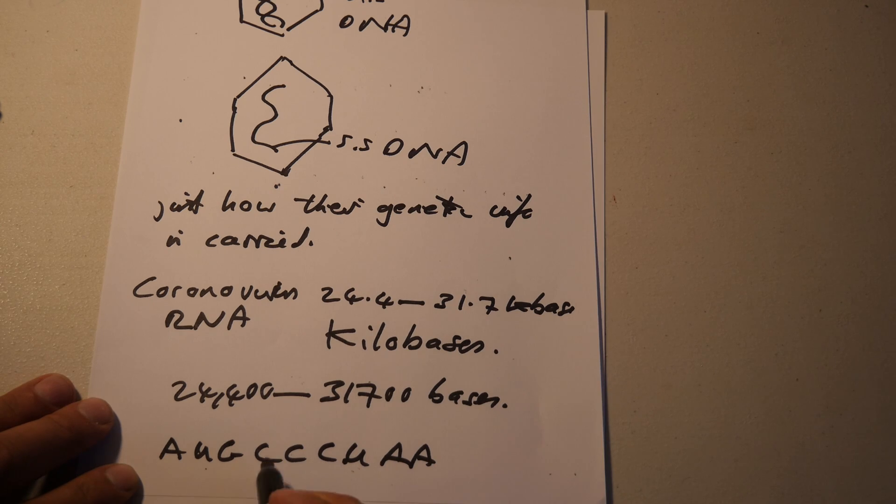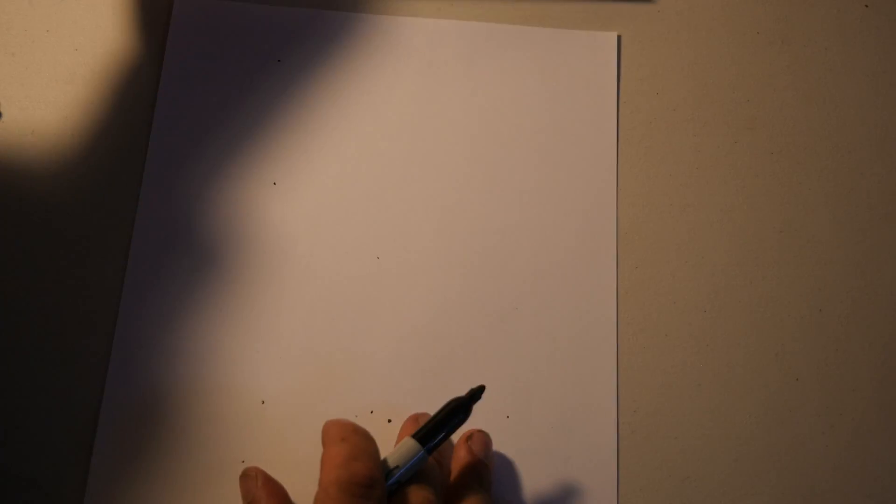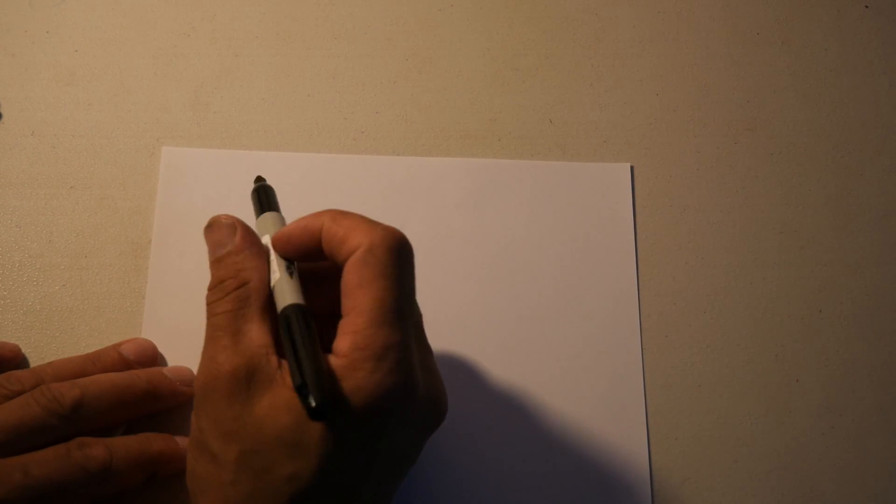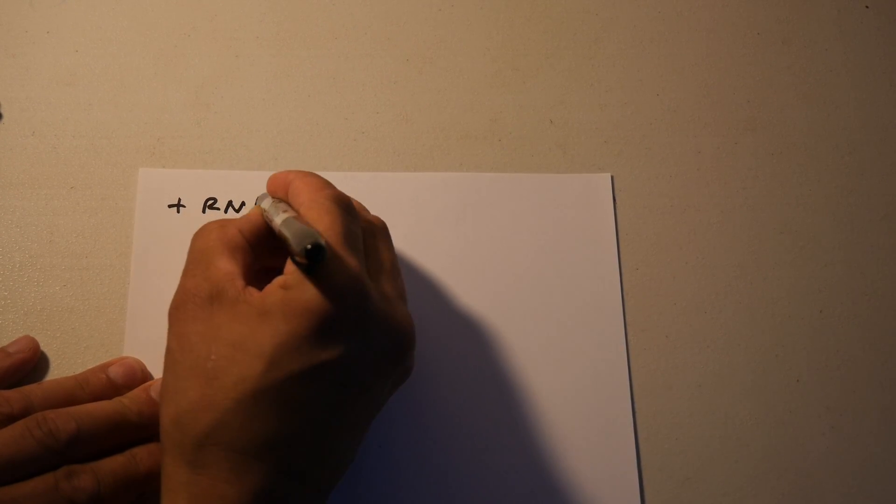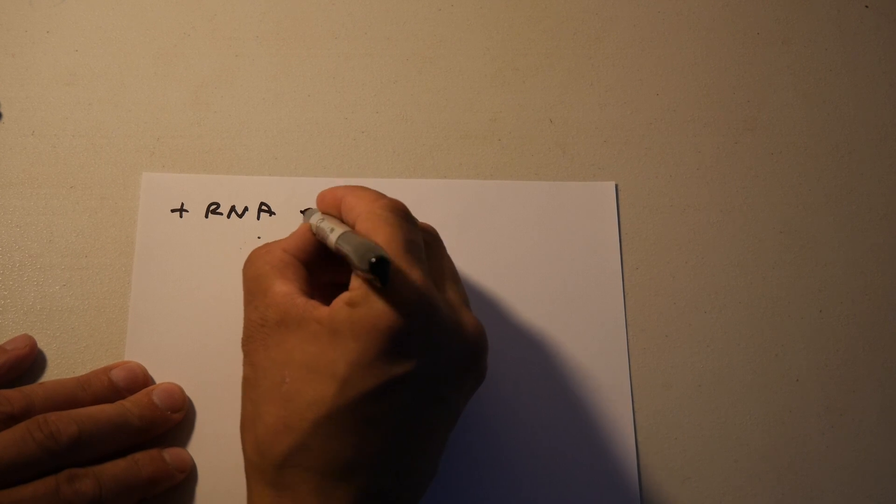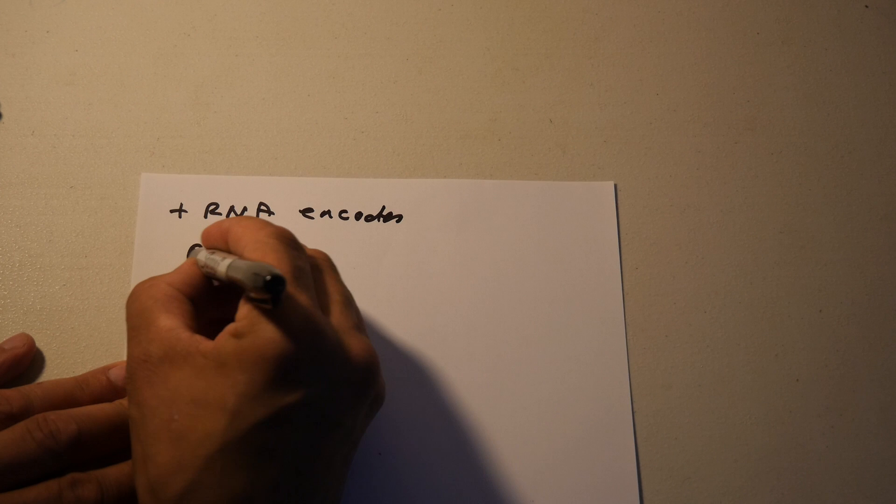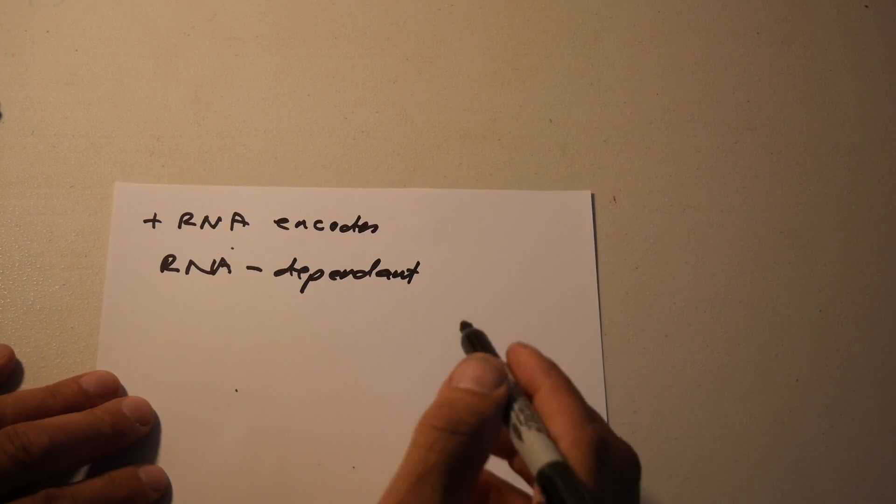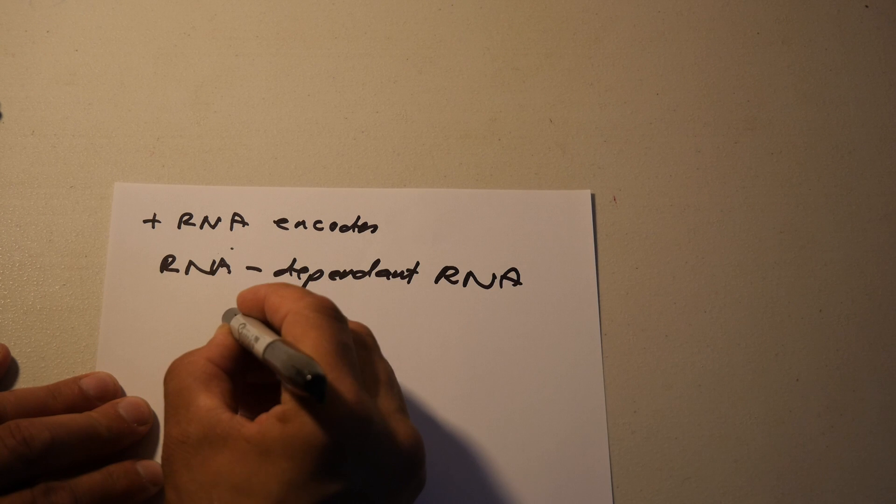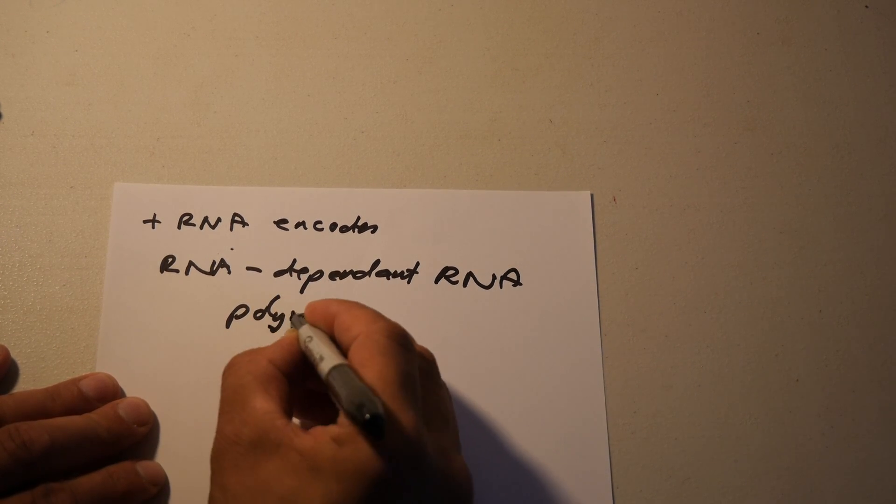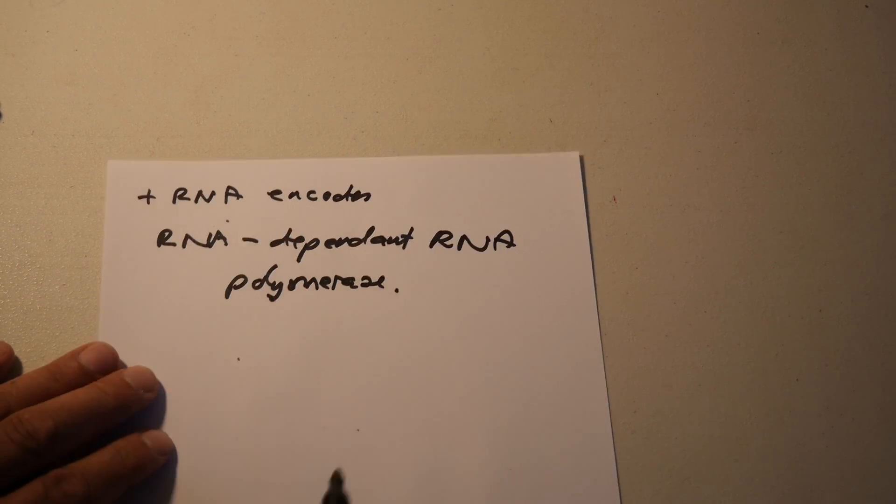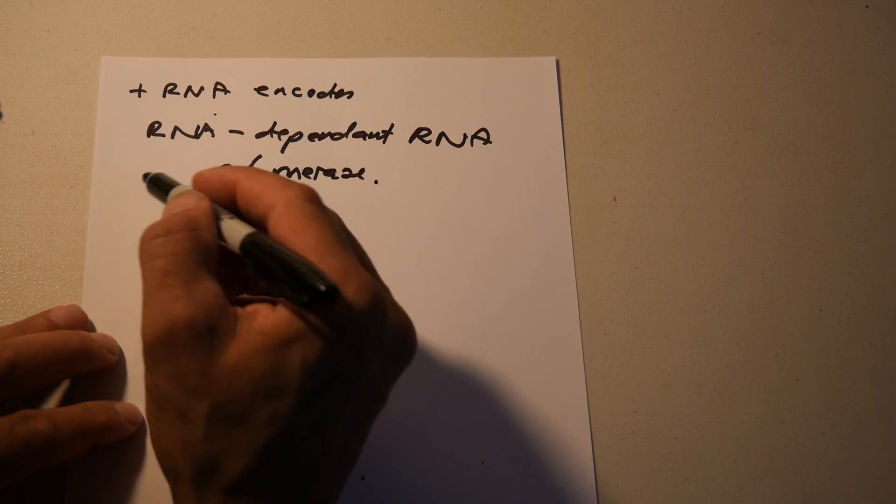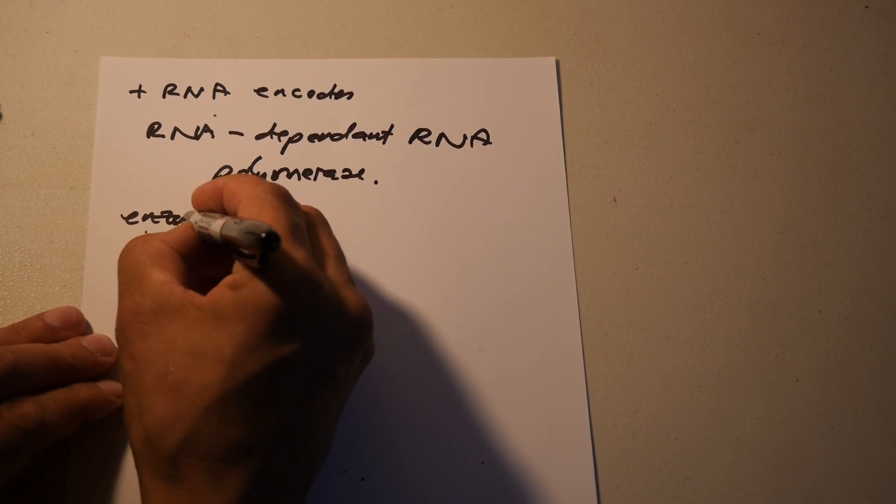So it's said they can be double, single-strand RNA, DNA. They're just different types that have evolved in evolution. The positive RNA encodes something called an RNA-dependent RNA polymerase. So that's an enzyme that basically replicates the DNA. So it replicates the RNA.